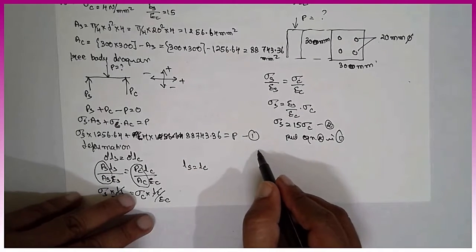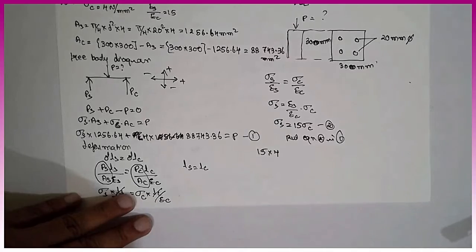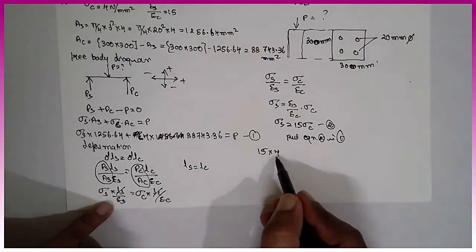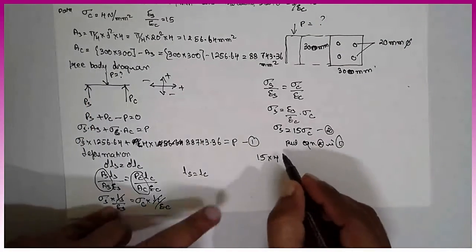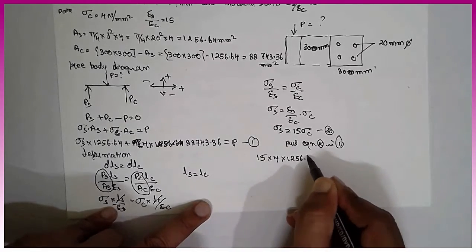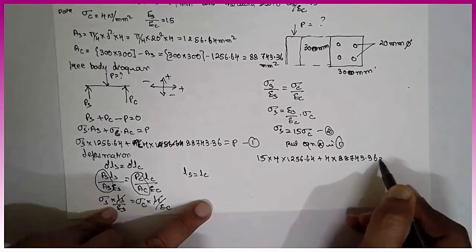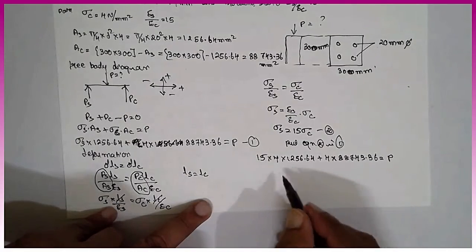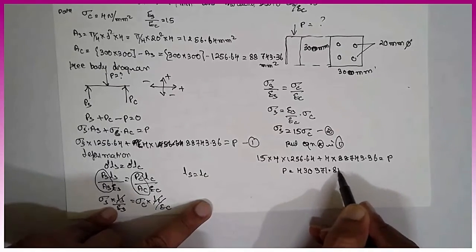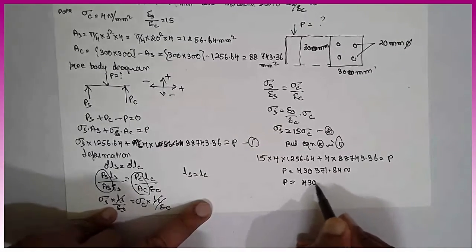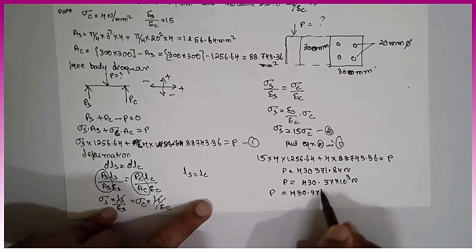What is the value of Sigma C? It is 4. 15 into 4. Now 15 into 4 because Sigma C is nothing but 15 into Sigma C. The value of Sigma C is 4 here, right here into 1256.64 plus 4 into 88743.36 equals P. Therefore, the value for P is 430371.84 Newton or P is equal to 430.37 into 10 raise to 3 Newton or P is equal to 430.37 Kilo Newton.